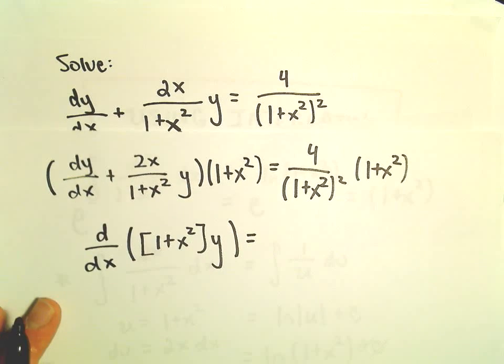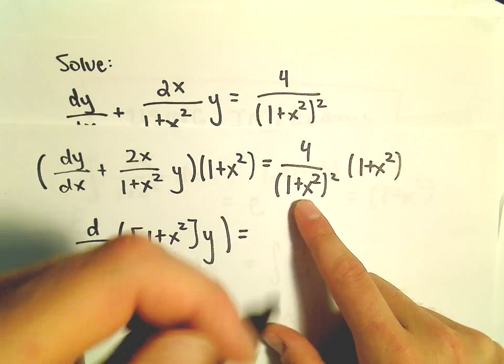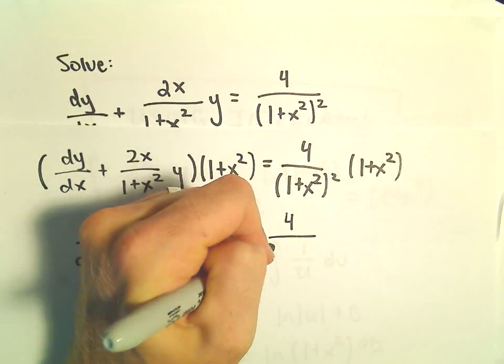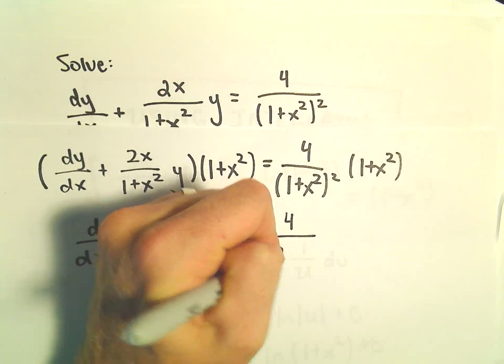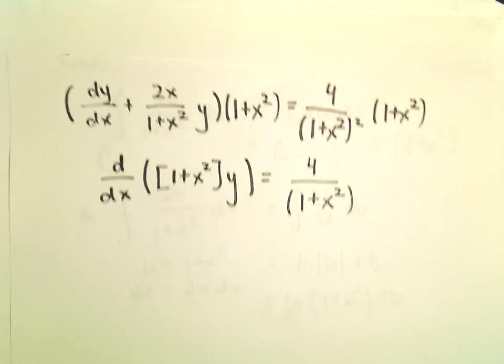On the right side, notice the 1 plus x squared will cancel out with 1 plus x squared in the denominator. So that's going to leave us with 4 times, or excuse me, 4 over the quantity 1 plus x squared.